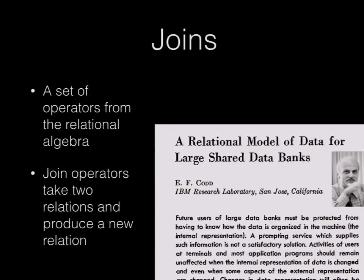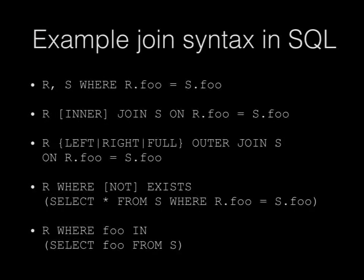A bunch of people at IBM in the 60s and 70s invented relational algebra, and System R showed the world how to do a SQL database. In SQL we have a whole bunch of ways of writing join queries, and I'm going to assume you all know what these things do. These are all equi-joins — something equals something — taking two relations, joining them together and producing a new relation. There are alpha joins, inner joins, semi-joins where you just test whether a matching row exists, and so on.